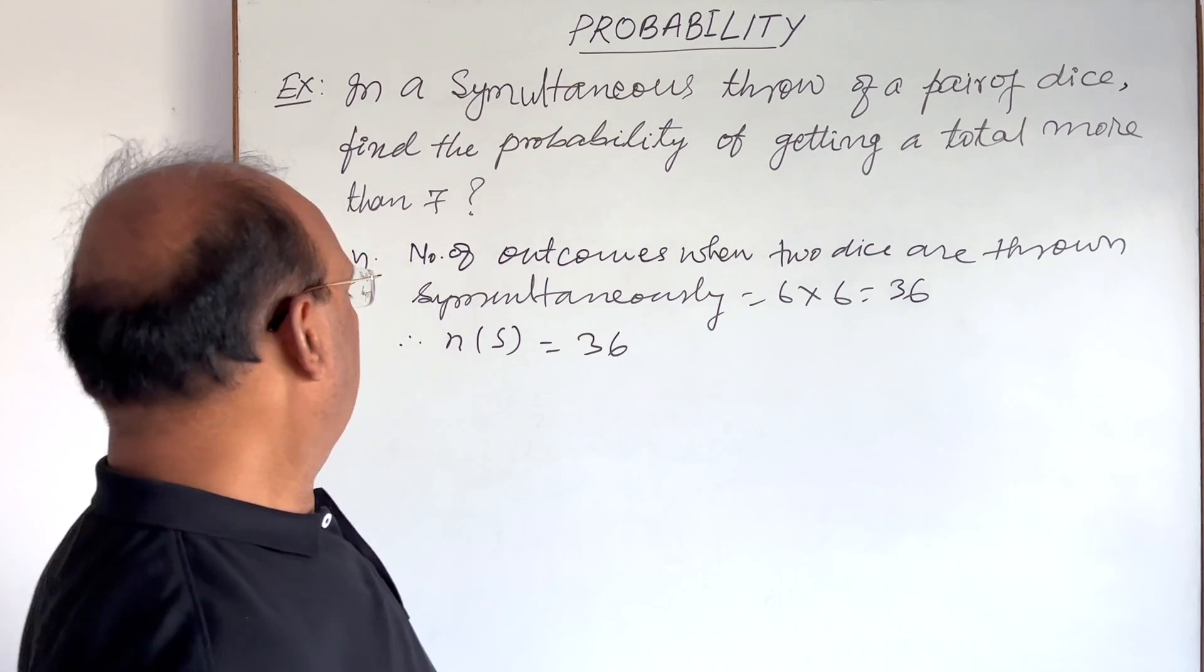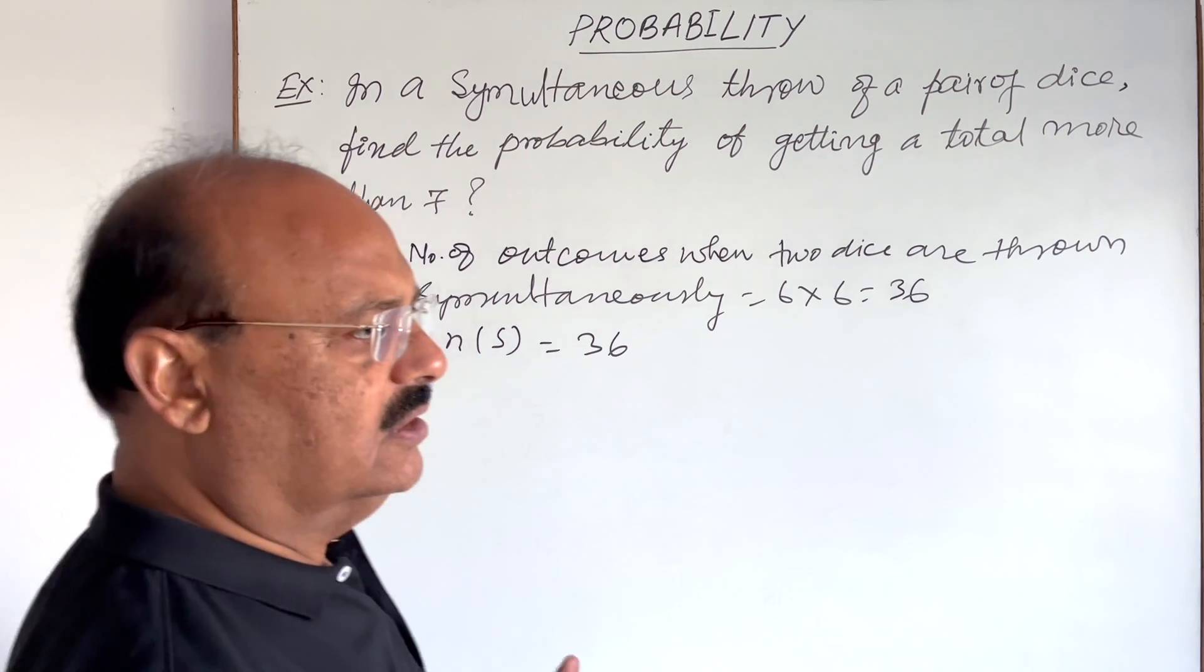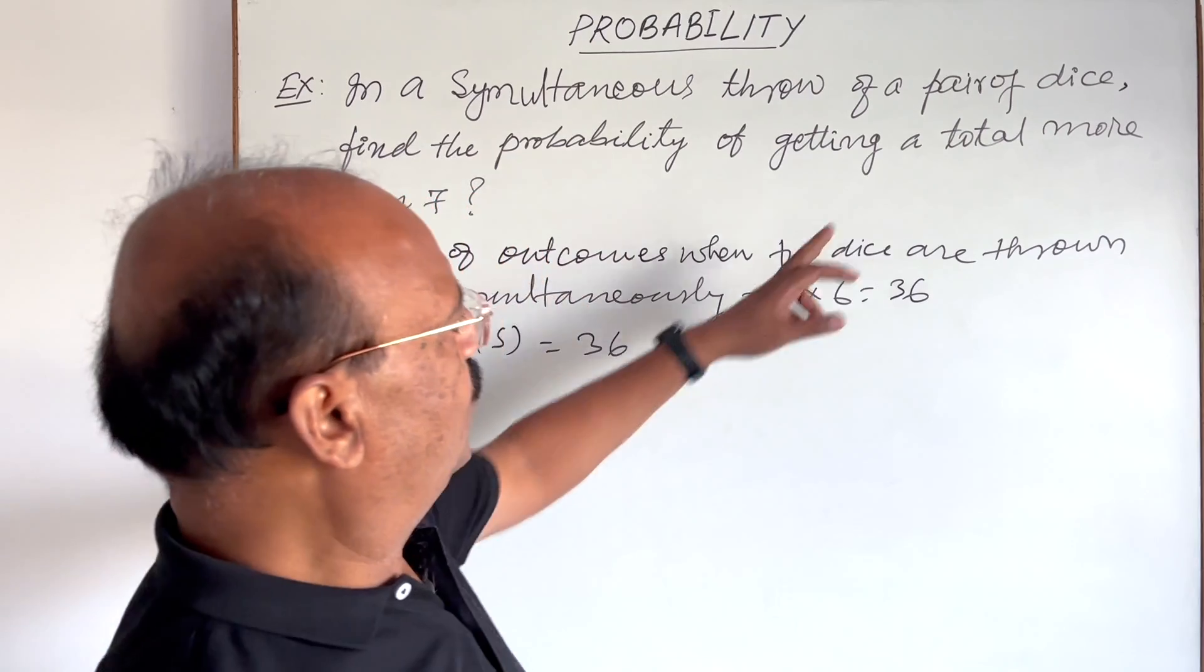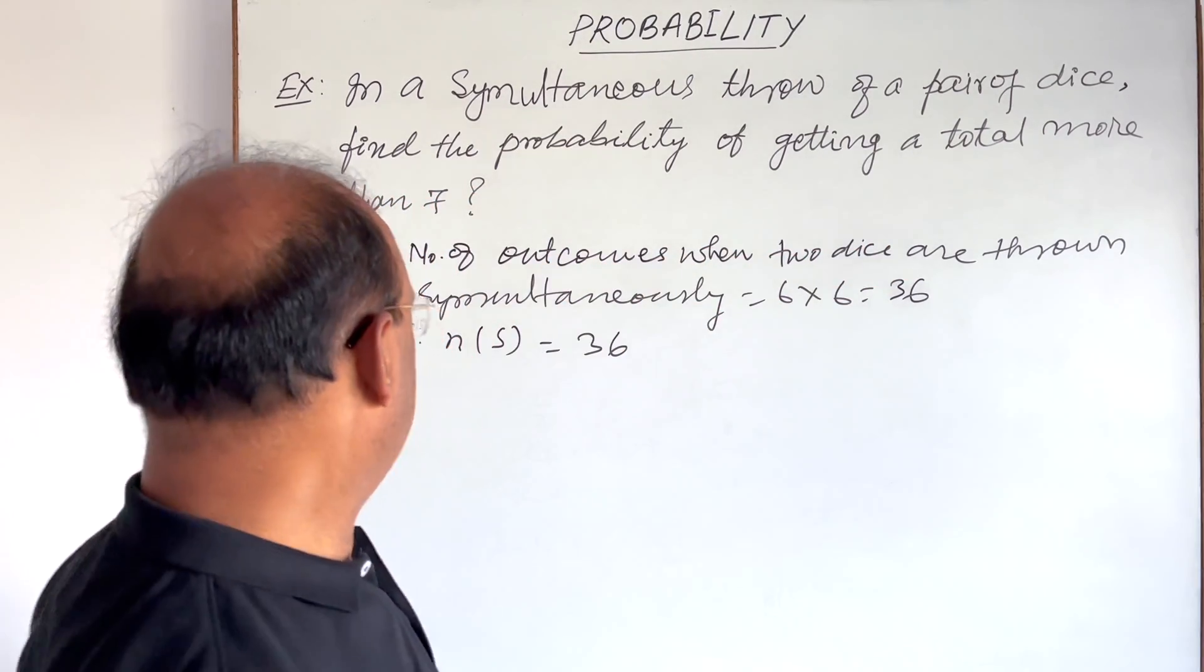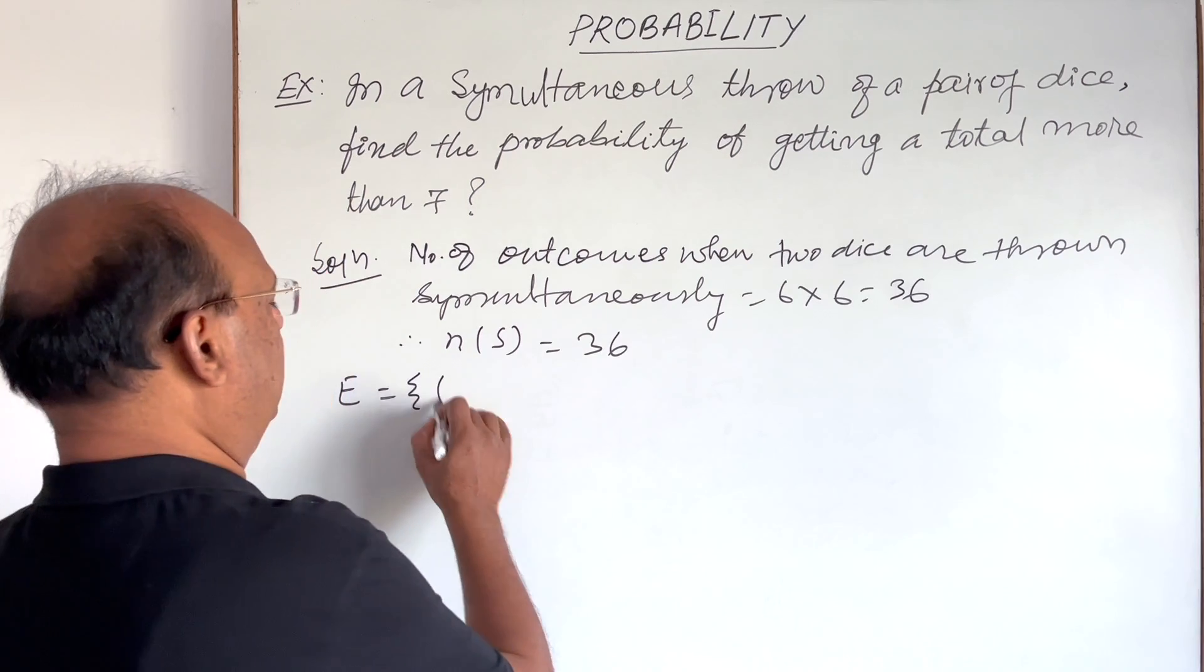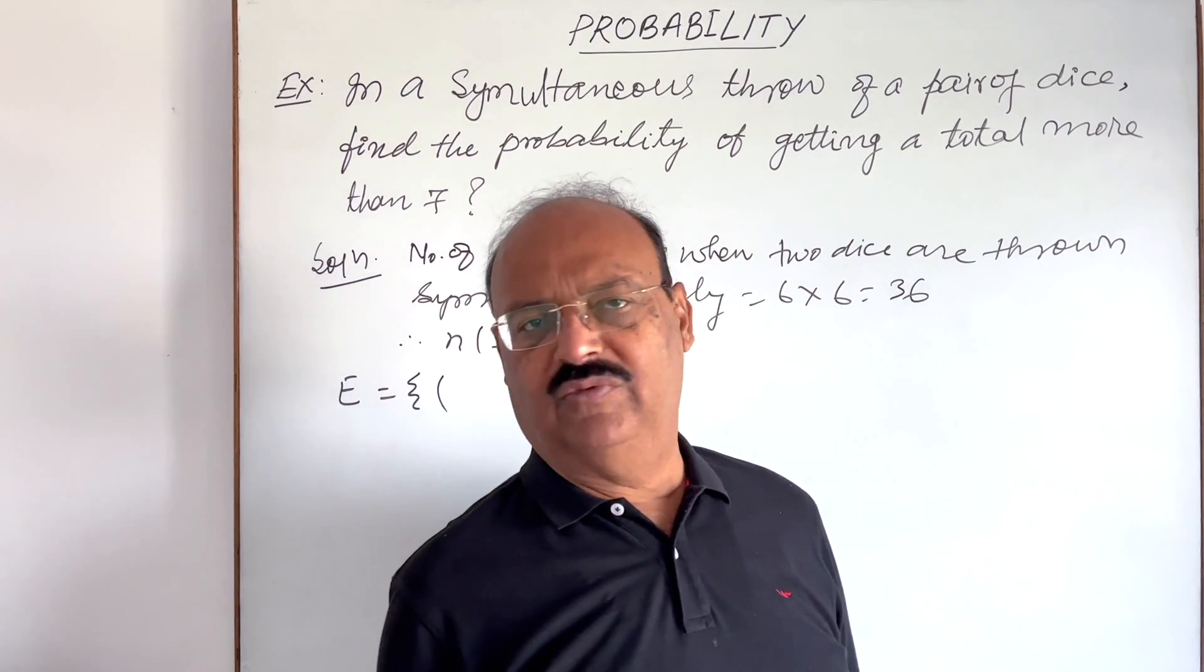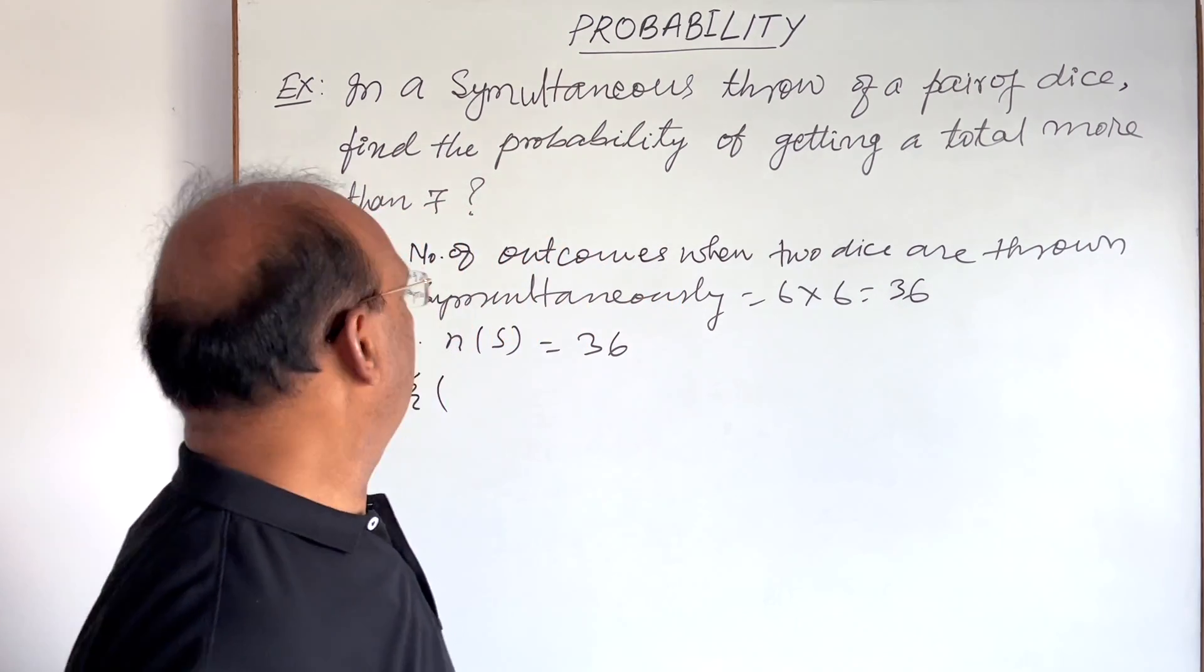Now we have to form a set of events. Events means set of favorable outcomes. So total should be more than seven. What are these possibilities? We cannot start with one here because one and in another dice maximum will be six. So one plus six will be seven, that will not be more than seven.